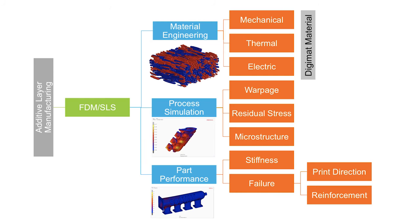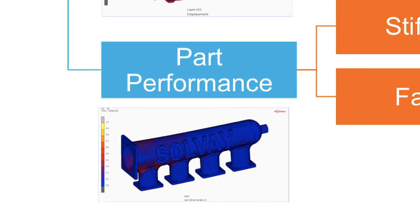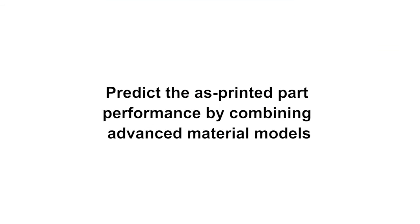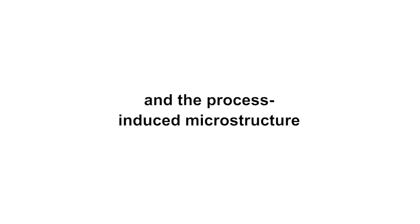And lastly, when it comes to part performance, e-Xstream is upgrading its Digimat structural analysis solution to enable product designers to simulate the printed part performance, things like stiffness, strength, etc., as a function of the as-printed material and the process setup. This requires a strong coupling between process and structure, which is typically ensured by the usage of an advanced material model which is itself dependent on the process parameters such as the printing direction.